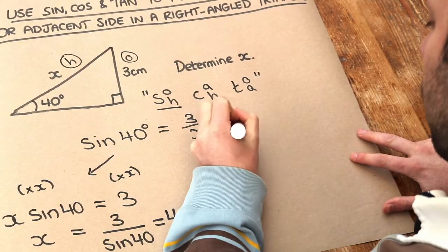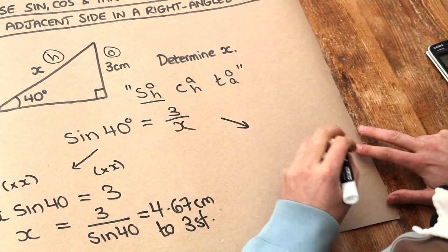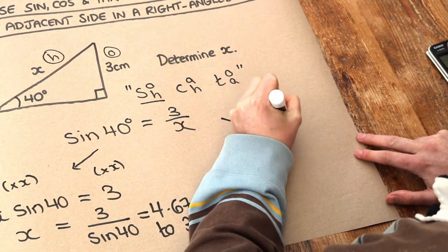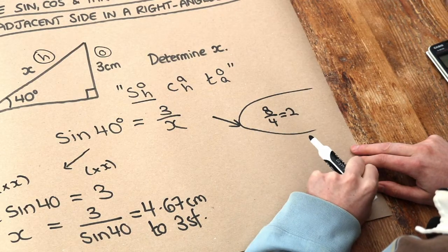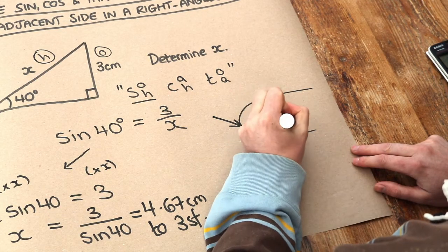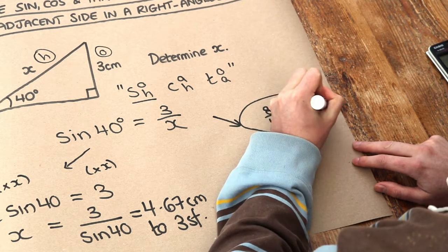Now it's a slightly quicker way, and I call this the swapsy trick. If you had, say, 8 divided by 4 is equal to 2, then what can you swap in this equation so that it's still true? Well, we can swap the 4 and the 2. 8 divided by 2 is equal to 4.